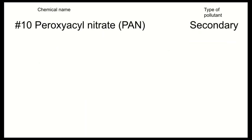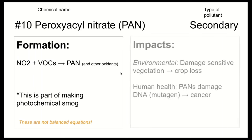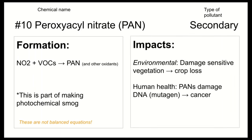Our tenth pollutant is peroxyacyl nitrate, abbreviated PAN, a secondary pollutant formed when nitrogen oxides and VOCs combine in the atmosphere, producing PAN and other oxidants as part of the formation of photochemical smog. PAN and other oxidants are highly reactive: they damage sensitive vegetation and can corrode the leaves of crop species, leading to major crop loss. For human health, PAN damages DNA — making it a mutagen — which can lead to cancer development.